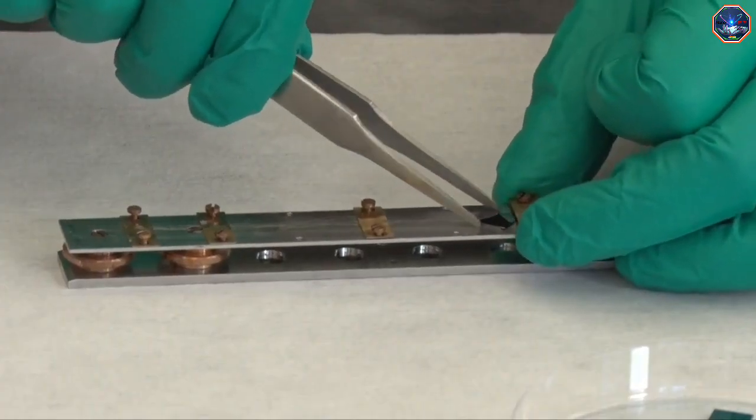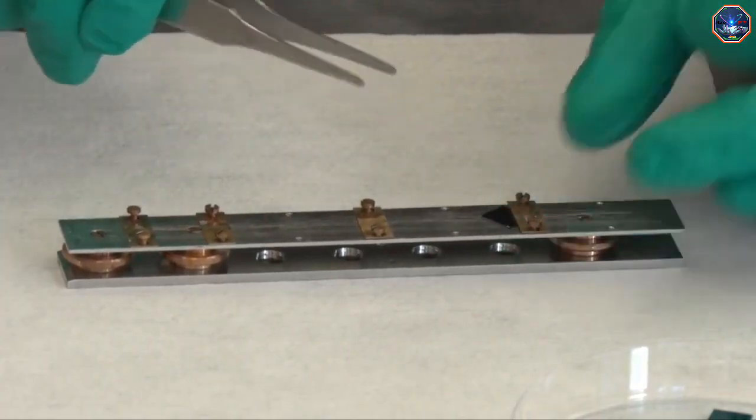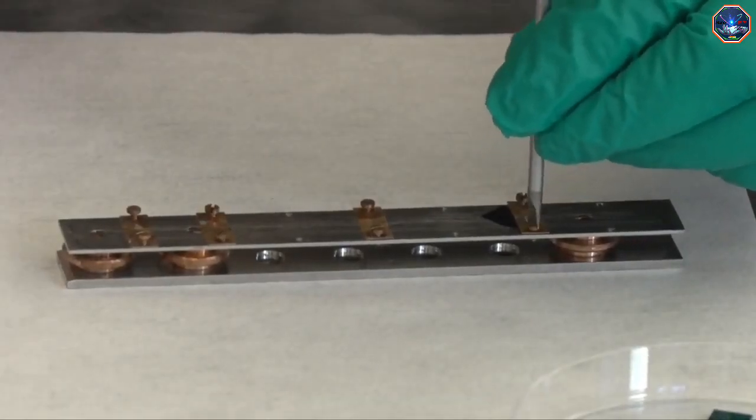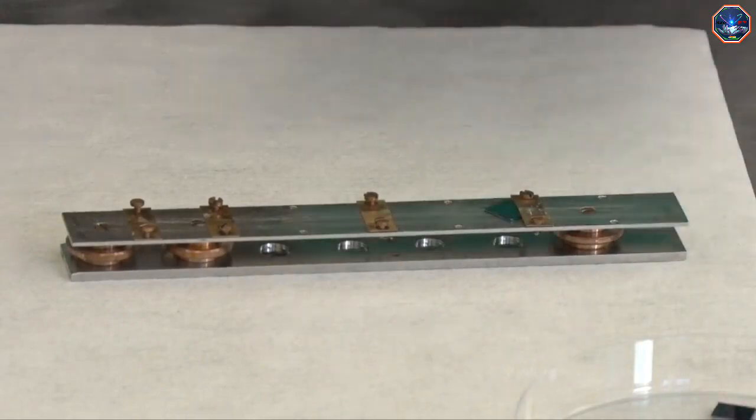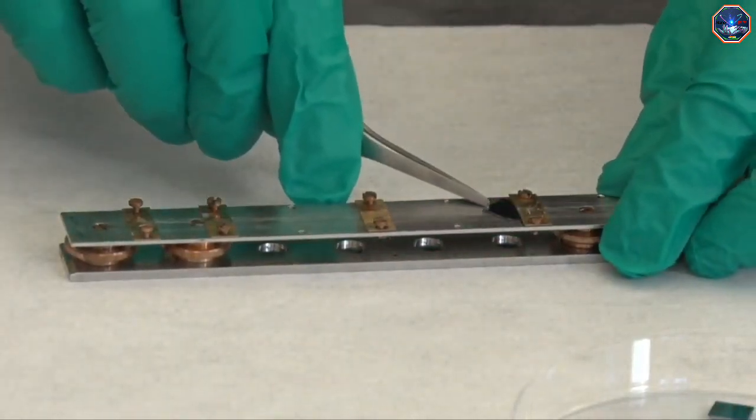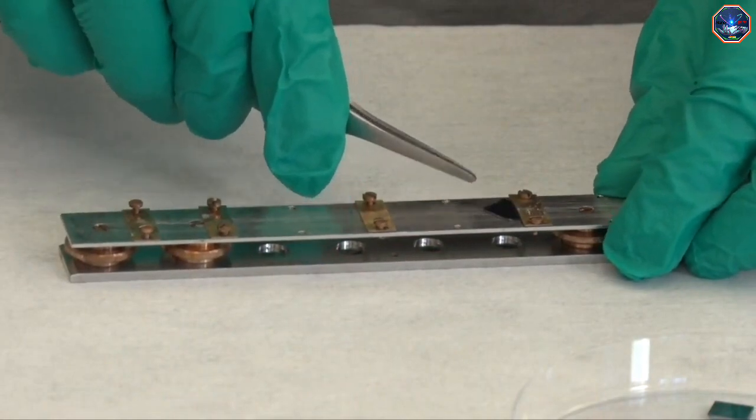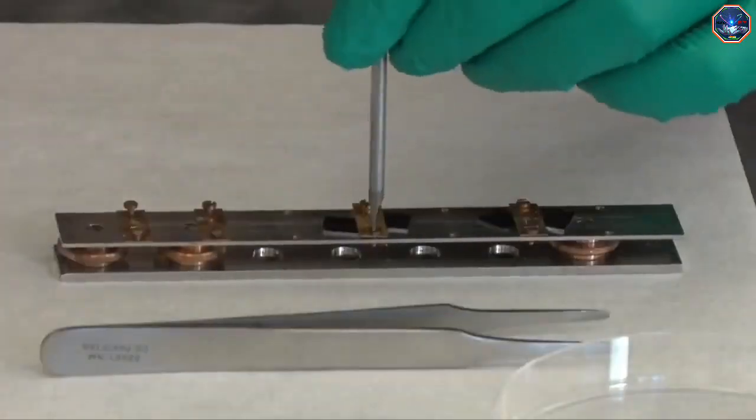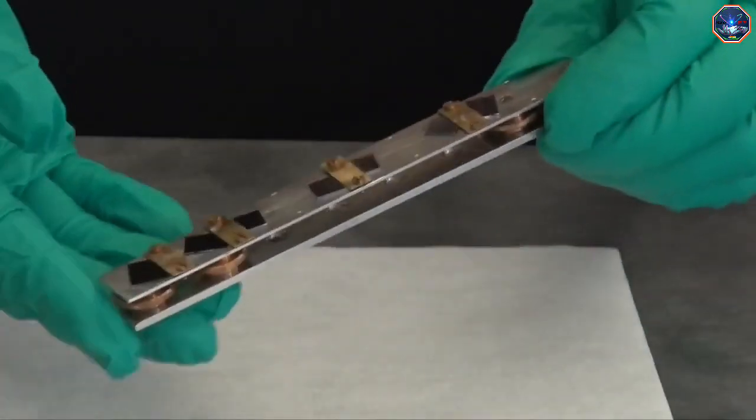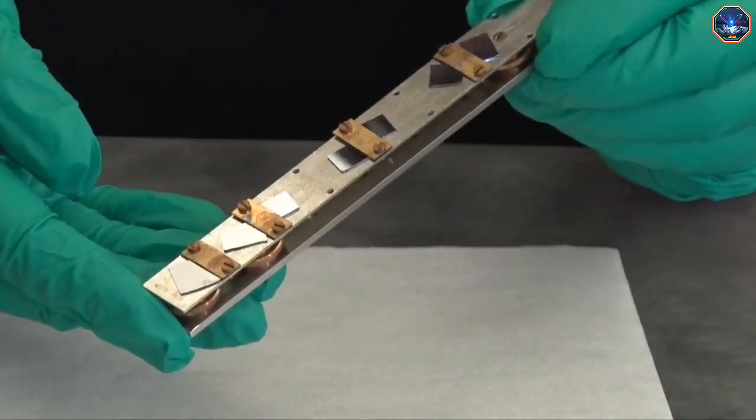The corner of the sample can be placed under one of the copper bars, and the small screws can be gently tightened to hold the sample in place. To make sure that the sample is held securely in place, I'll use the tweezers to make sure the samples won't move. I can load additional samples on the sample holder in the same way, and once I finish, the samples are ready to be loaded into the XPS chamber.